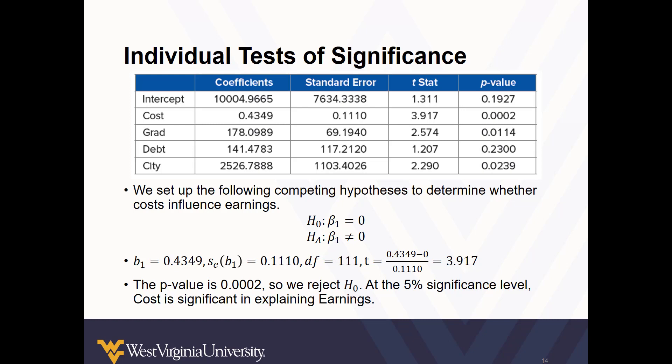So now let's look at whether the cost variable influences earnings. If we look to a t-table of p-values, we'd find that the p-value is 0.0002. So we can reject the null hypothesis. This means that cost is significant in explaining earnings. Take another look and determine what other variables are significant at explaining earnings.